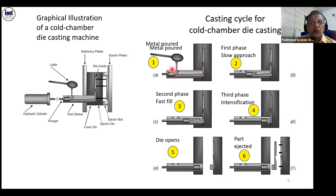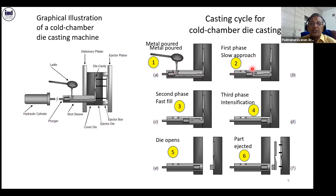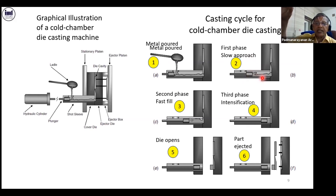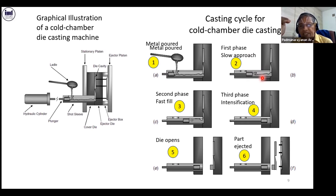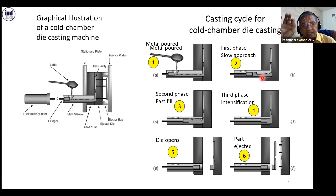Through the short sleeve, metal is poured through this opening. You can see a small tip called the plunger tip, connected to the plunger rod. In the first phase — the slow approach — the metal is pushed so that all the air in the front end is pushed out through the runner, gate, and chill vent or overflow. The metal is placed exactly at the entrance of the cavity, which is called the gate. At the end of the first phase, the metal will remain at the gate — this is point number one to note down.